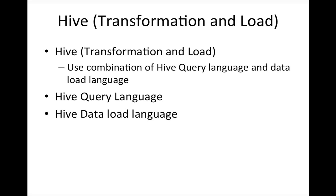So far we have covered creating tables in ODS and loading data with minimal transformations. From there, if you want to load data into a dimensional data model — which you typically use in an enterprise data warehouse — you have to select data from the ODS tables, apply all the transformation rules that match your dimensional model in EDW, and load data into those tables.